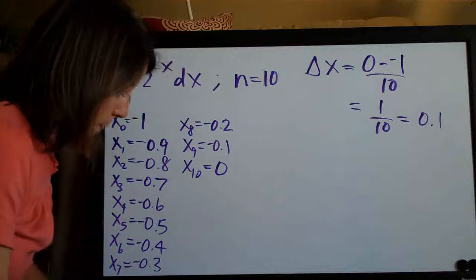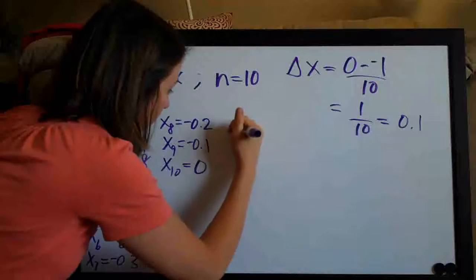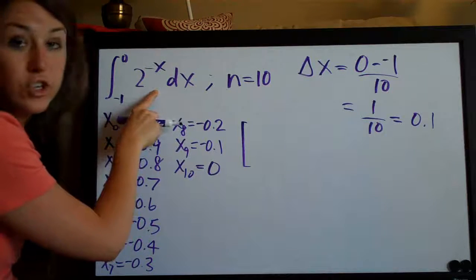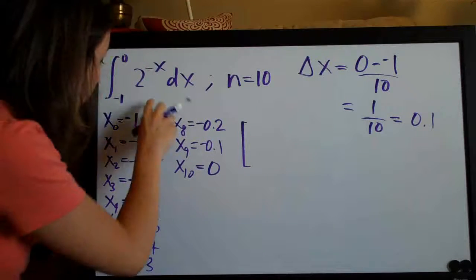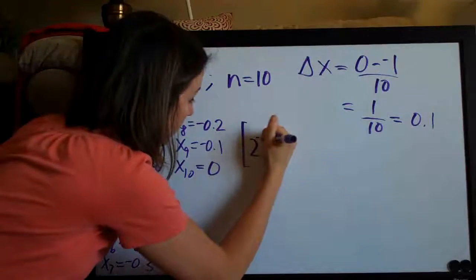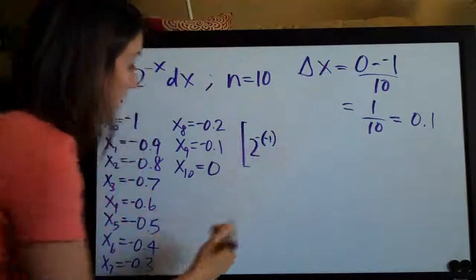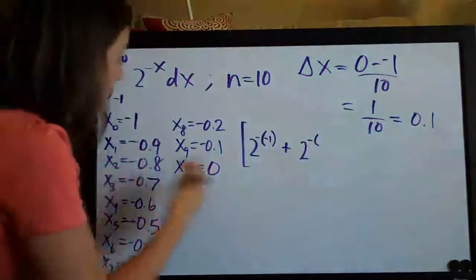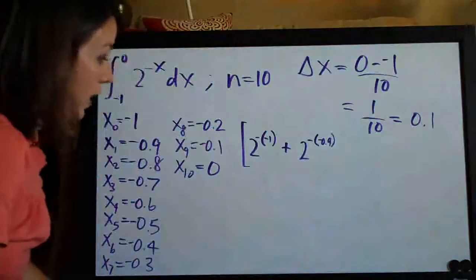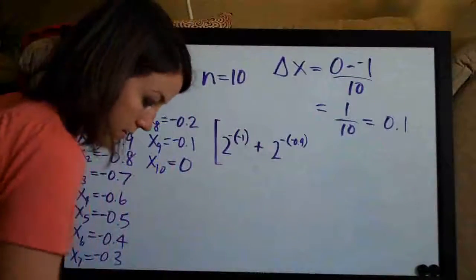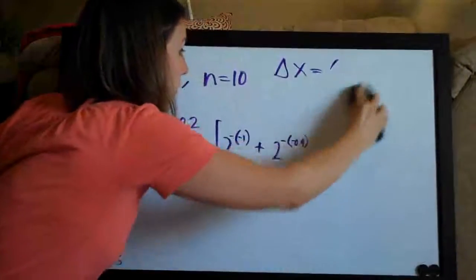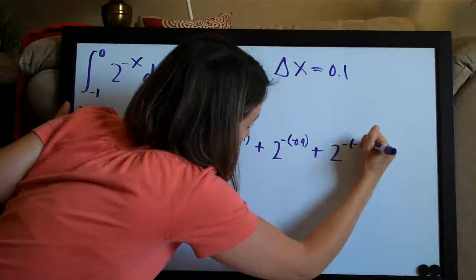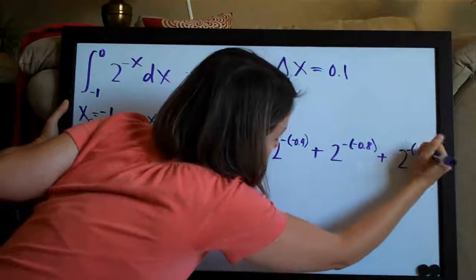Now we go ahead and apply the trapezoidal rule — it's going to be a lot of writing. We plug in each one of these x values into our function 2 to the negative x. So our first term using negative 1 will be 2 to the negative of negative 1. Then we add 2 to the negative of negative 0.9, then 2 to the negative of negative 0.8, then 2 to the negative of negative 0.7, and we just keep going.